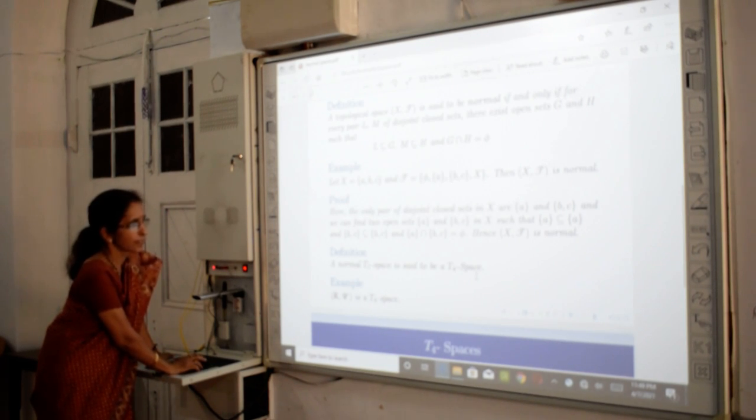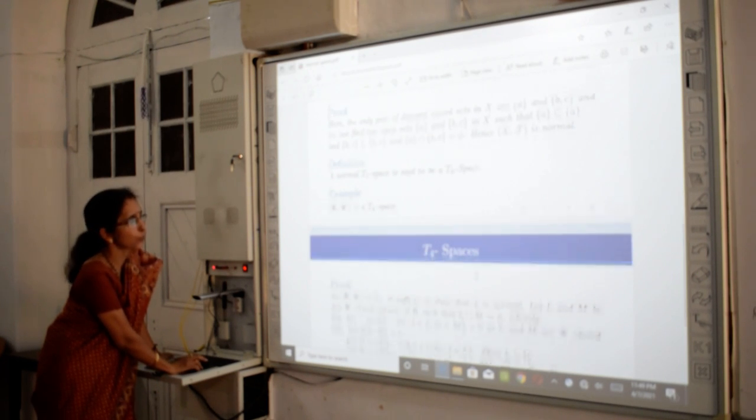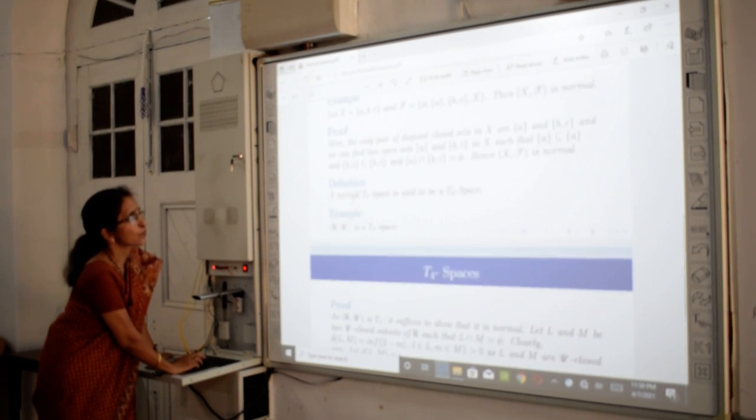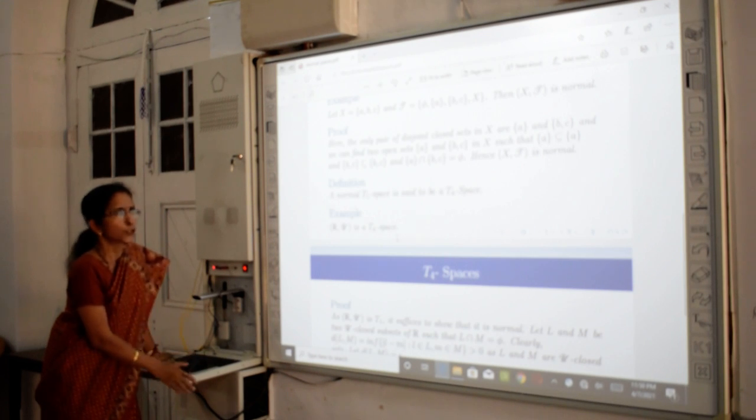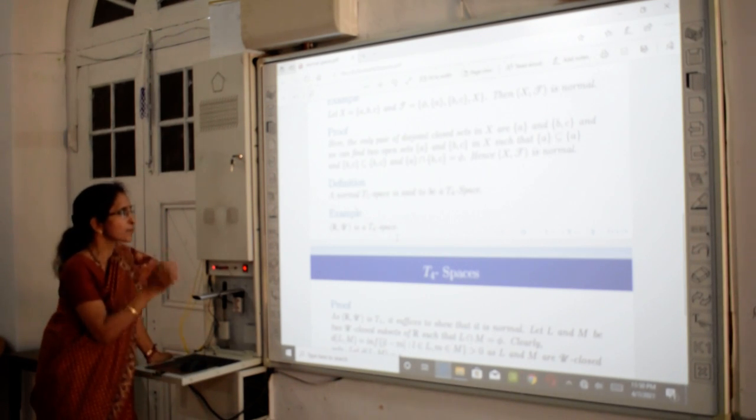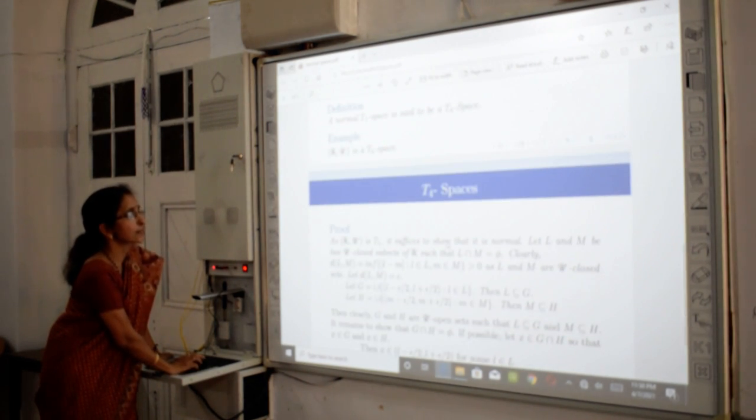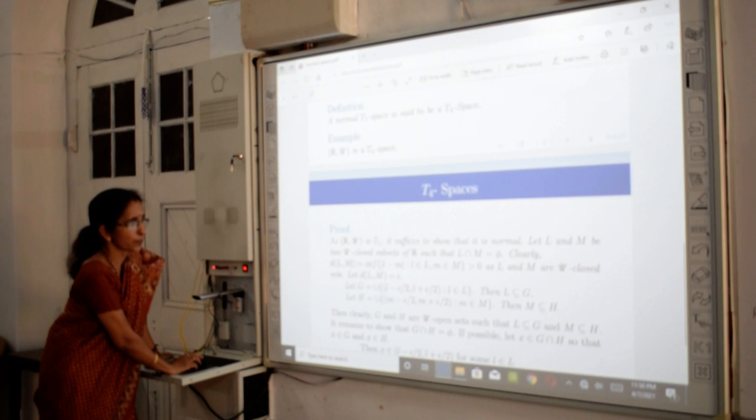Now, we will discuss an example of T4 space. We know that R with usual topology is a T4 space. We have also seen this as a T3 space, T1 space. And now, we will show that R with usual topology is T4. As R with usual topology is T1, here it is sufficient to show that it is normal.